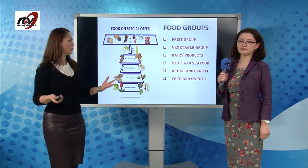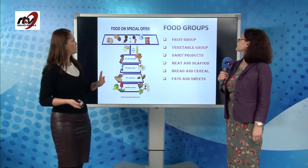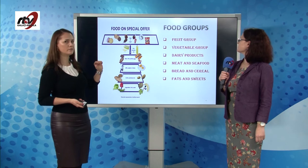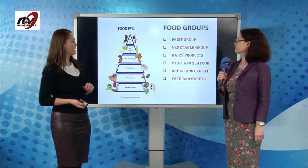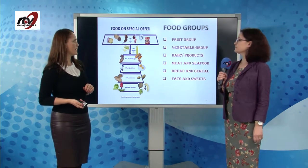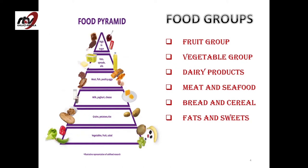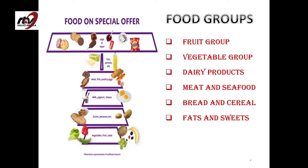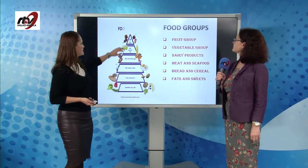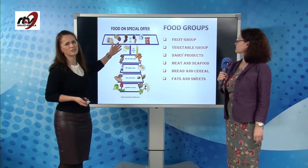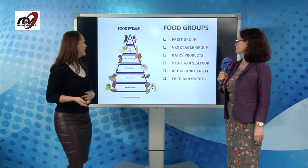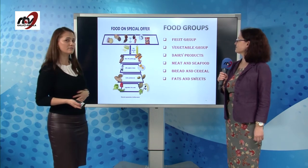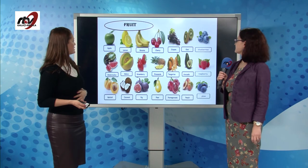When we talk about food, we talk about different food groups. We have fruit, vegetables, dairy products, meat and seafood, bread and cereal, fats and sweets. We should eat less fats and sweets, but sweets are so delicious, so probably it's kind of difficult to stop eating them.